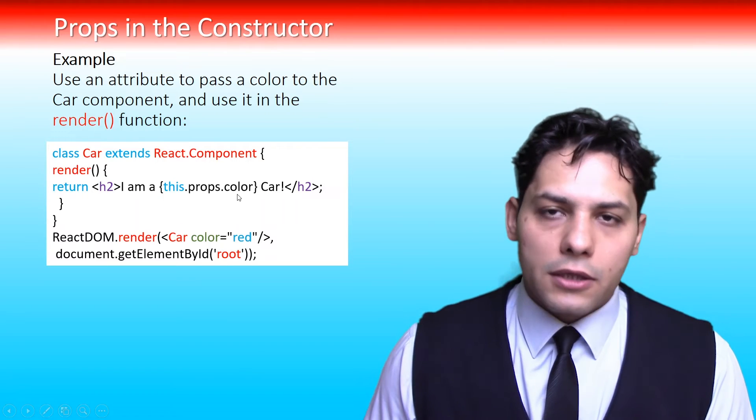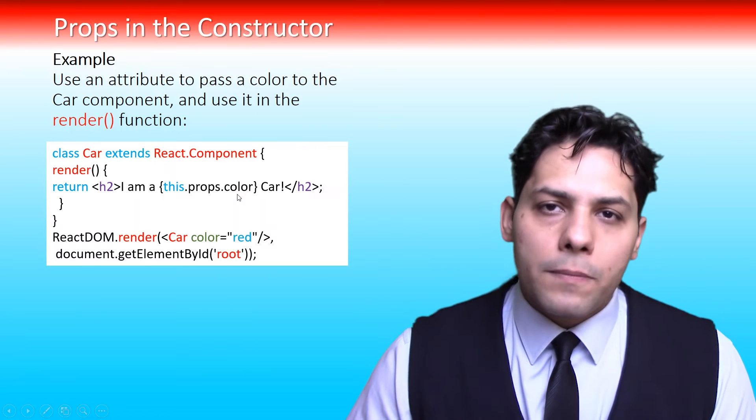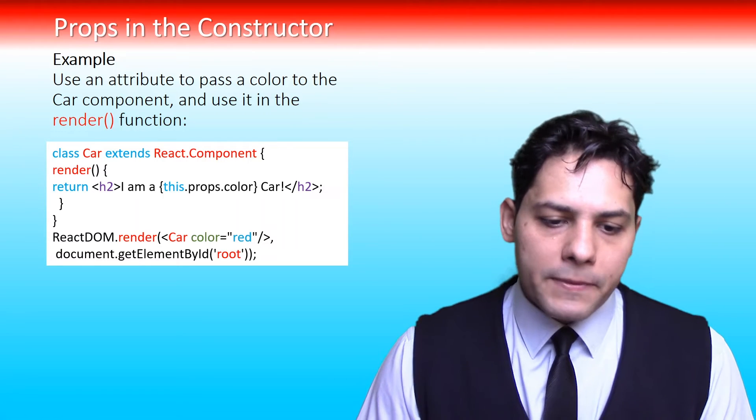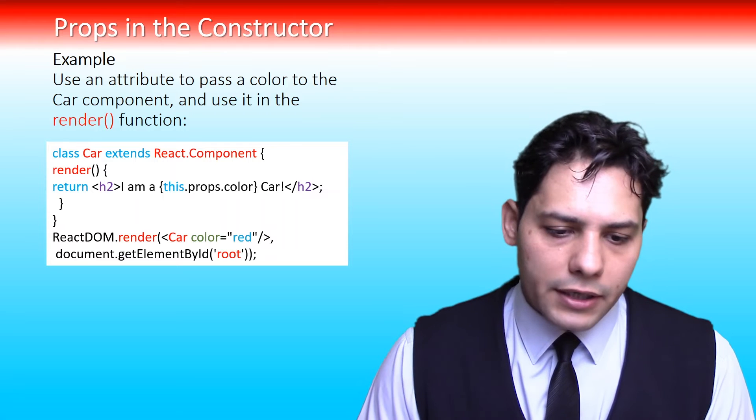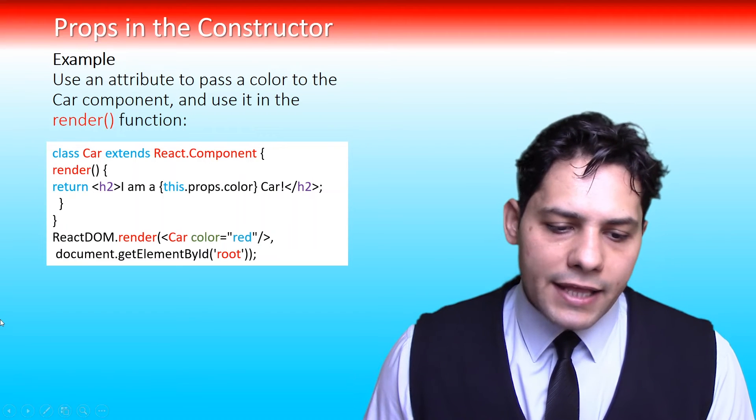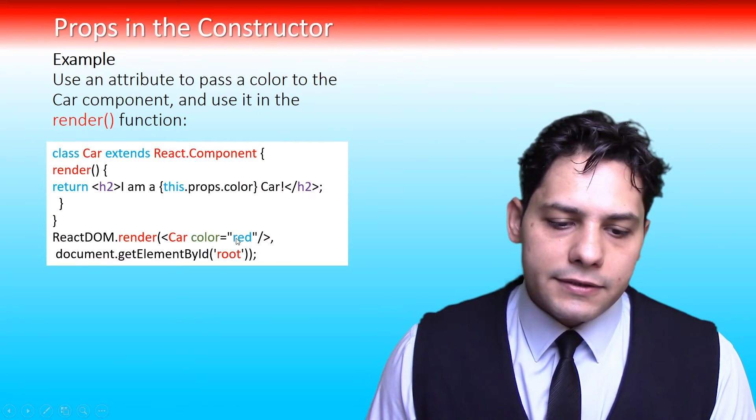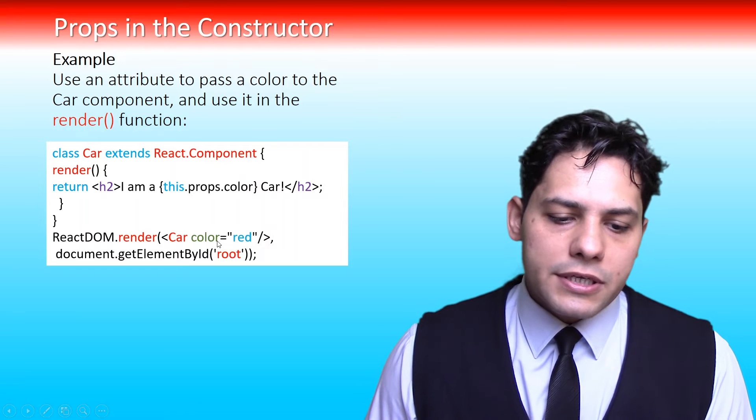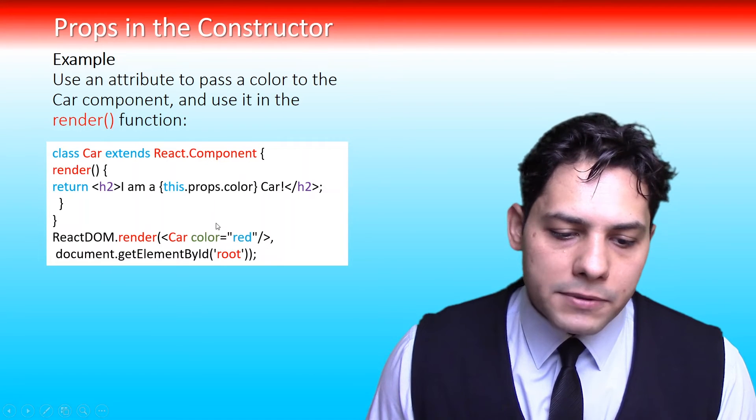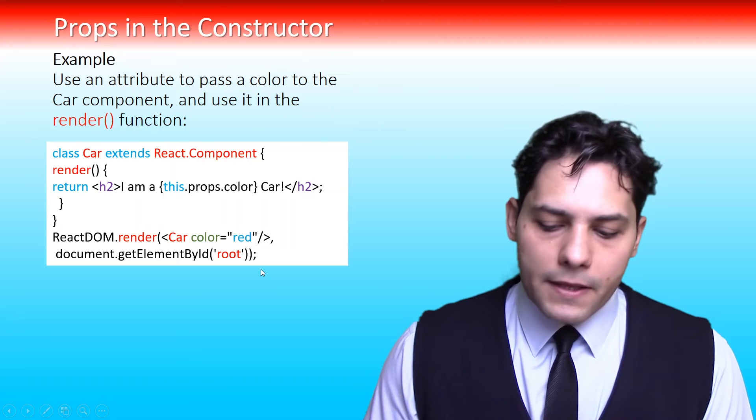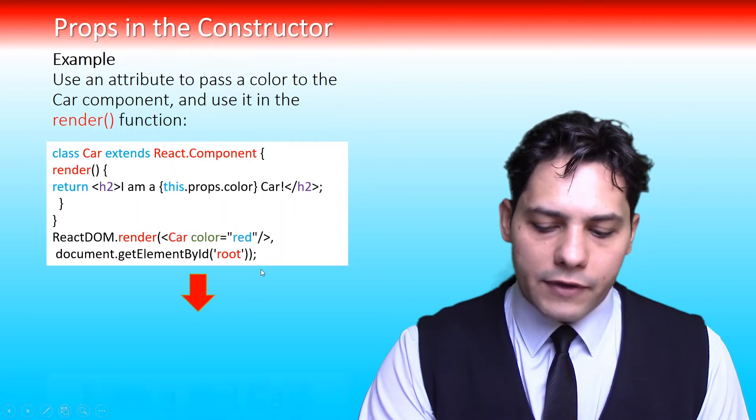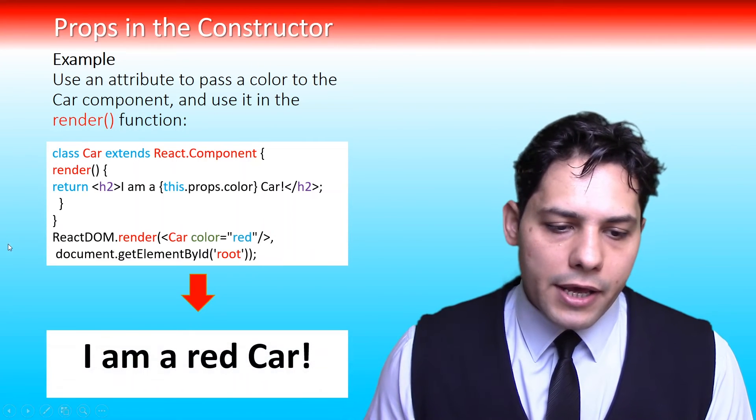We are setting up our props here with attribute of color and here we add the value of red to these props properties. Now the result we have: I am a red car.